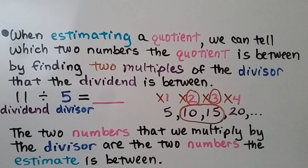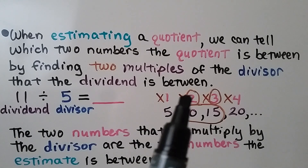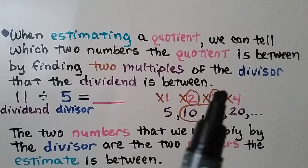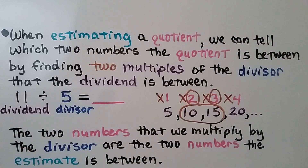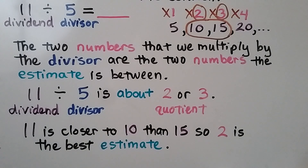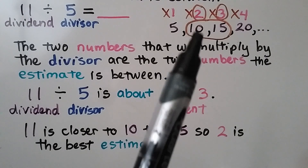The two numbers we multiply by the divisor are the two numbers the estimate is between: 1 times 5 is 5, 2 times 5 is 10, 3 times 5 is 15. Because 2 and 3 are the numbers we multiply by the divisor 5, the estimate is between 2 and 3. So 11 divided by 5 is about 2 or 3, and since 11 is closer to 10 than to 15, 2 is the best estimate — it's closer to 5 times 2, which is 10.